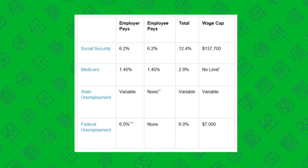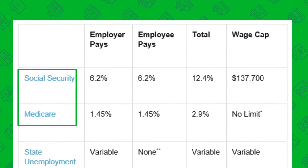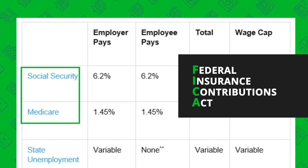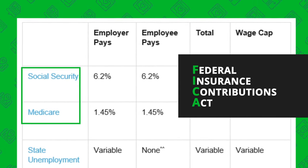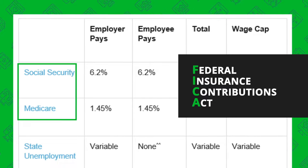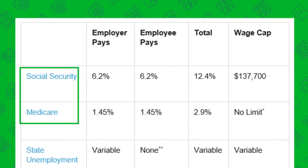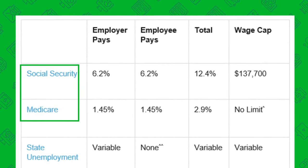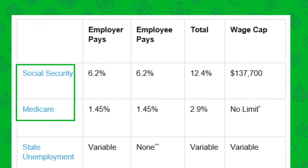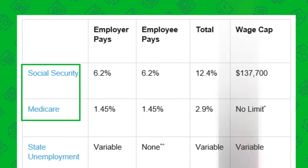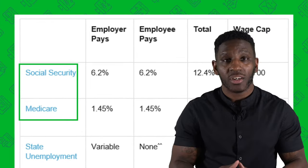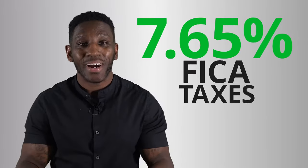Let's discuss each type of tax, starting with Social Security and Medicare. Based on the Federal Insurance Contributions Act, you and your employee each have to pay 7.65% tax, also known as FICA. This is a mandatory tax expense for both the employee and employer used to fund Social Security and Medicare in the U.S., based on the gross wages earned. More specifically, 6.2% goes towards Social Security and 1.45% goes towards Medicare, combined for a total of 7.65% in FICA taxes.